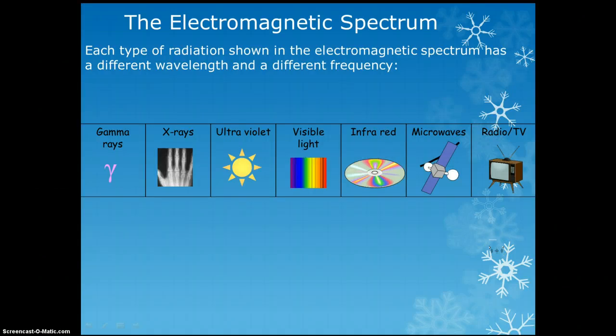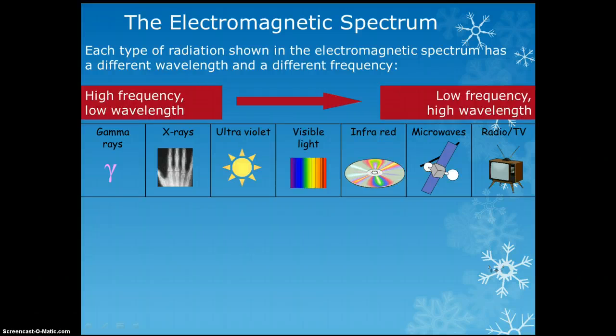They're in this order because gamma rays have really high frequency but low wavelength. As I move up the spectrum, the reason they're given different names is because their wavelength and frequency changes. The further right I go, the lower the frequency but the higher the wavelength.